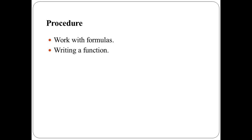The procedure to write a function is: select the cell to enter the function, then type an equal sign. Then type the complete function with necessary parameters following its syntax, and press the Enter key. An alternate way to write a function is to click the relevant button provided to insert the function, select a function from a category, refer to cells to enter necessary arguments, and then click the OK button.